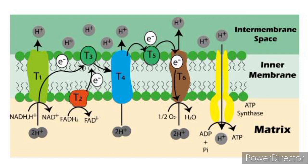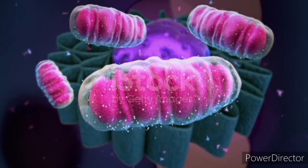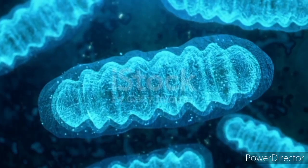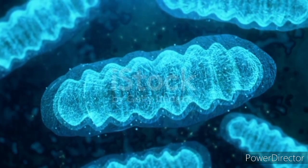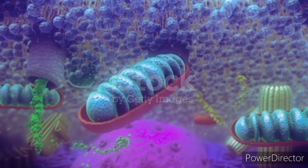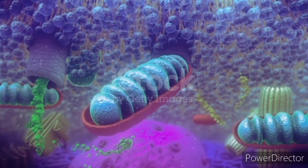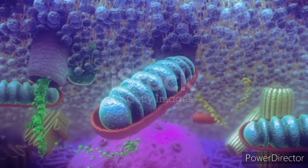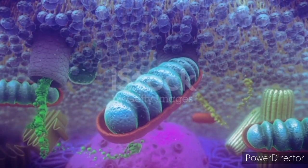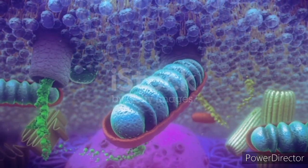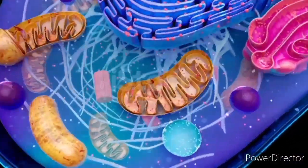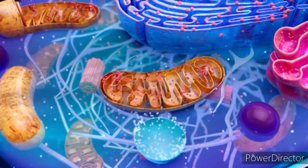Mitochondrial diversity. Mitochondria in different tissues or organisms can vary in shape, size, and function. Some specialized cells might have distinct mitochondrial characteristics tailored to their specific functions. Understanding mitochondria's complexity and diverse functions continues to be an active area of scientific exploration, contributing to our knowledge of cellular biology, health, and disease.